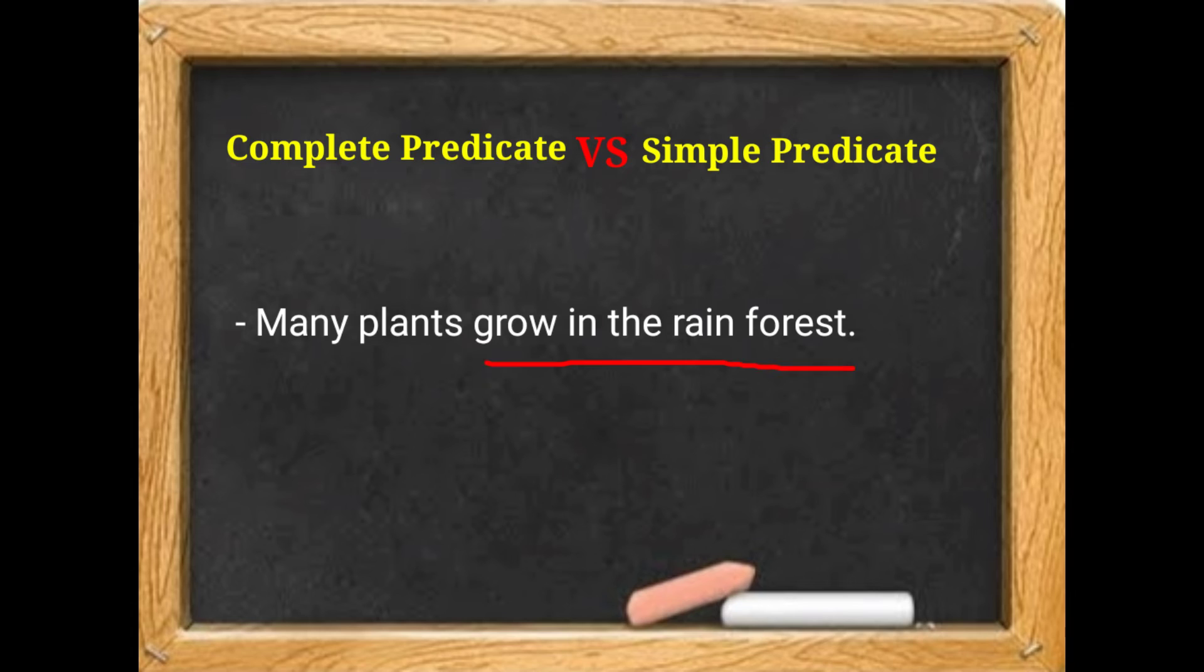Now tell me if you can find the simple predicate. Remember, the simple predicate is the main word or words in the complete predicate. So what is the simple predicate in this example? Good job - grow, the verb grow.